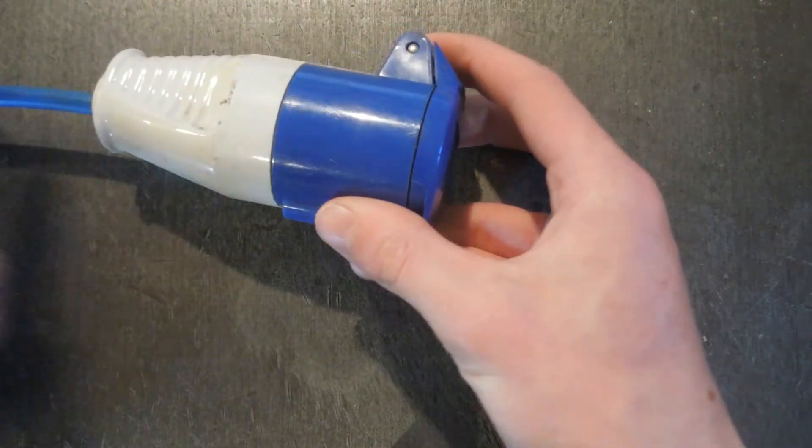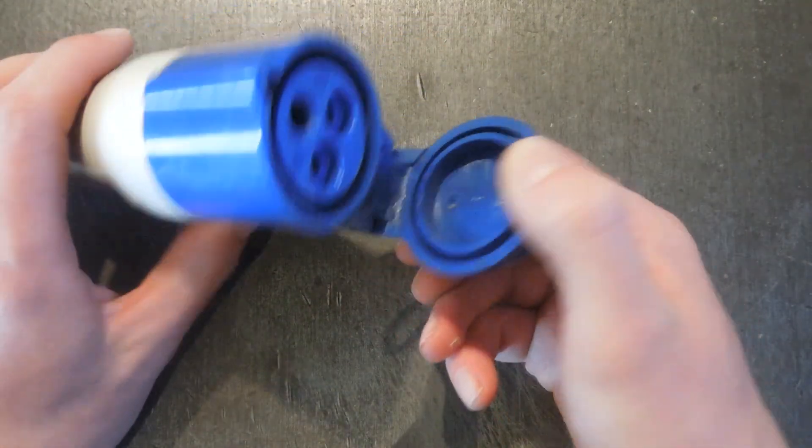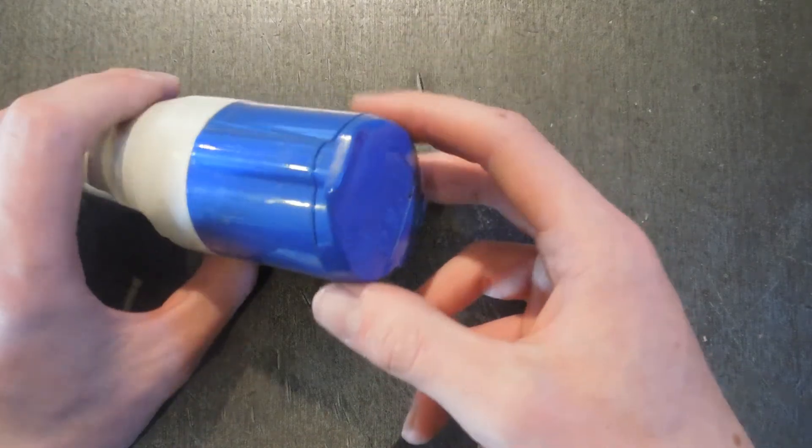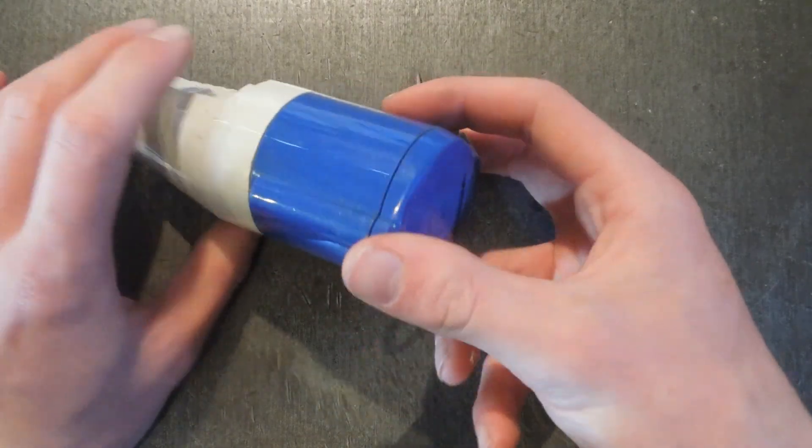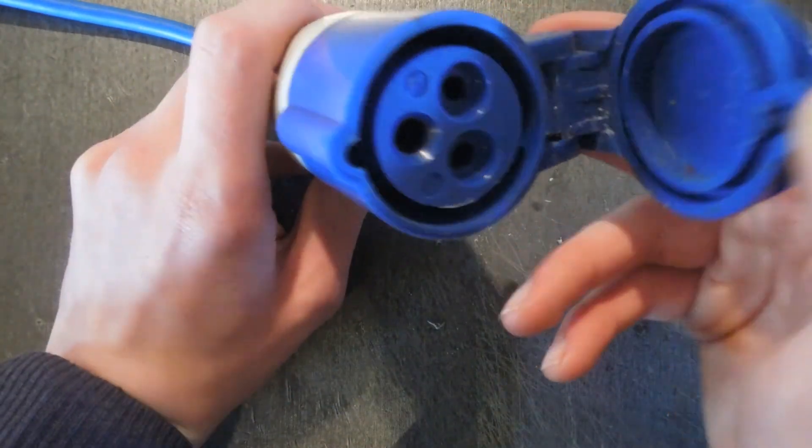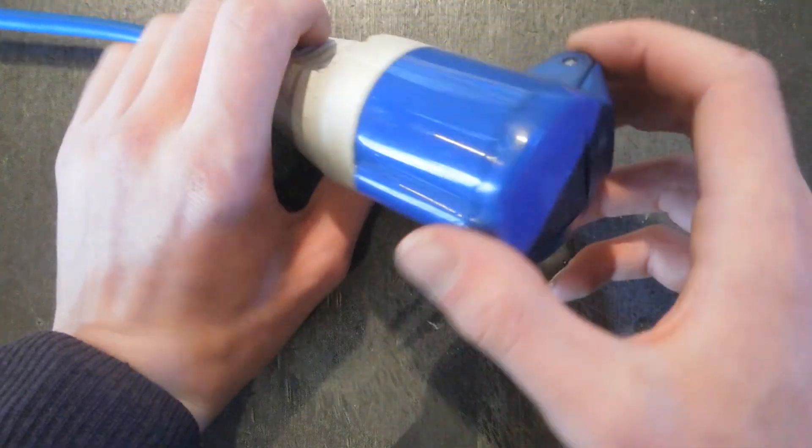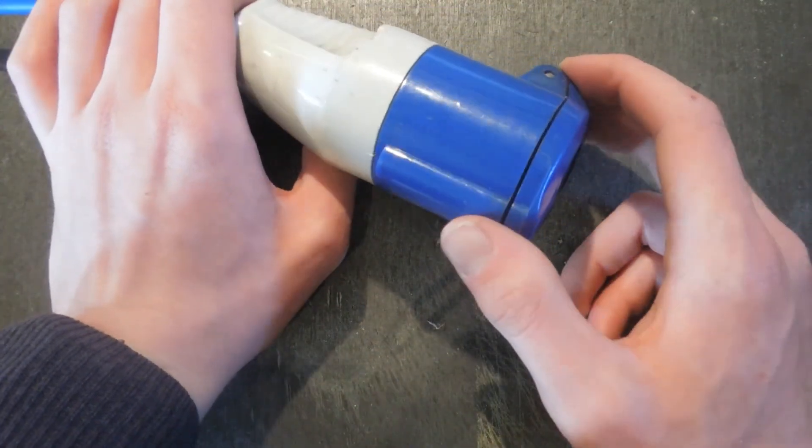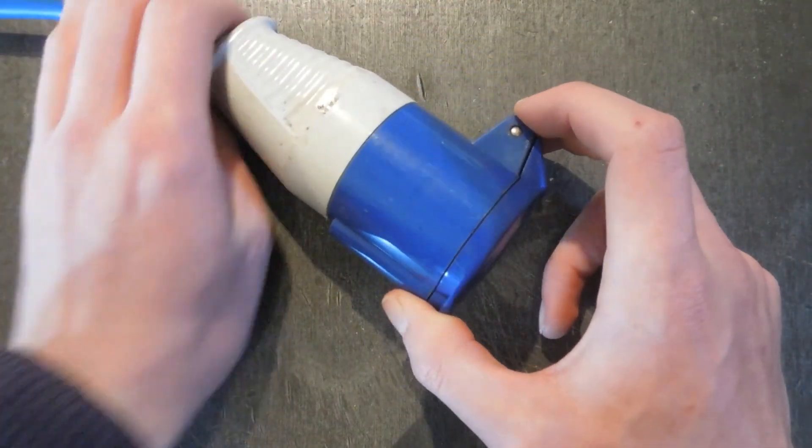However, this is only a temporary fix because it's not very safe. In reality, what you should do is get some of these plugs, and this is what I'm going to do in the future. Until I get these installed, I'm going to use my extension method. These plugs have the same voltage but an increased current of 16 amps, which means you're less likely to pop a breaker or blow the fuse.